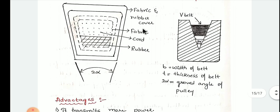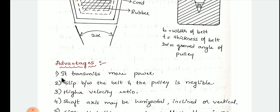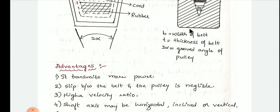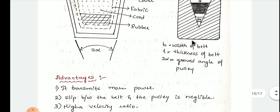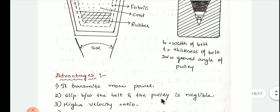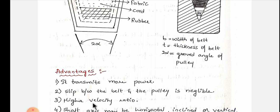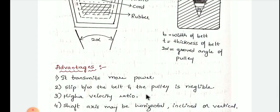What are the advantages of using V-belt drive? First, the transmission power is more because the slippage in the V-belt drive is less. Slip between the belt and pulley is negligible, whereas in open and cross-belt drive, the slippage chances are more. As a result of the less slippage, we have a high velocity ratio. Velocity ratio is N2 divided by N1 — the speed of driven to speed of driver — and this will be more due to negligible slip.